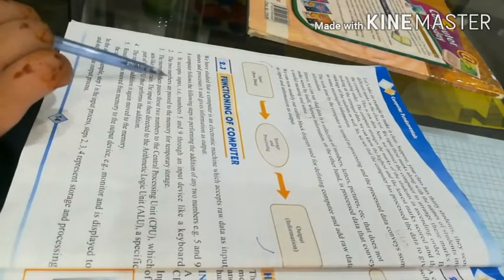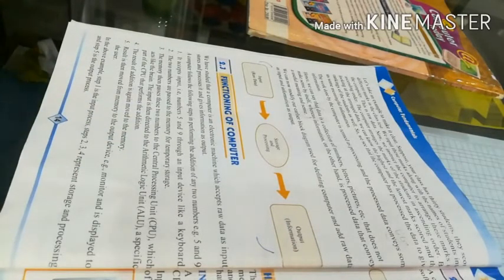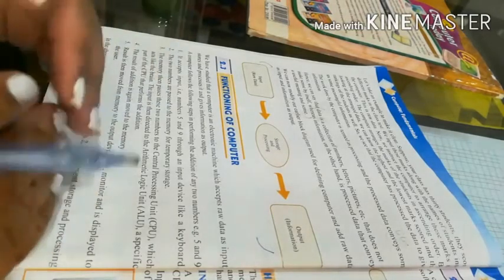Second point is the two numbers are passed to the memory for temporary storage. First of all, when you enter it, the two numbers will pass to the memory. I have told you that the computer stores first.